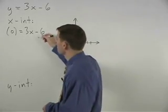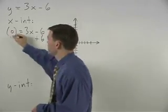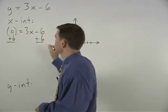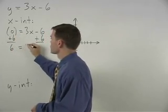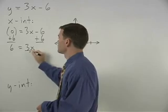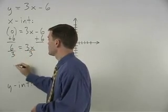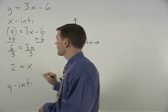Solving for x, we add 6 to both sides and we have 6 equals 3x. Dividing both sides by 3, 2 equals x.